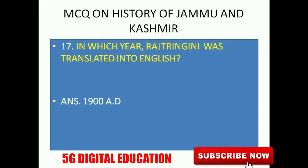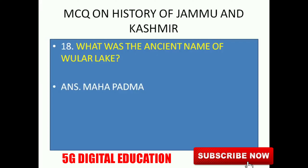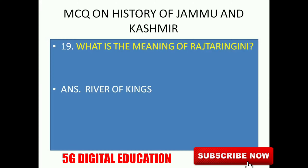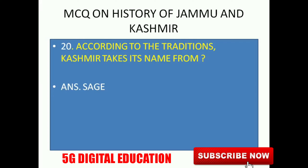Next: In which year was the Rajatarangini first translated into English? It was originally written in Sanskrit, and it was translated into English in 1900 AD. Next: What was the ancient name of Wular Lake? The ancient name of Wular Lake was Maha Padma. Next: What is the meaning of Rajatarangini? The meaning of Rajatarangini is 'River of Kings'.